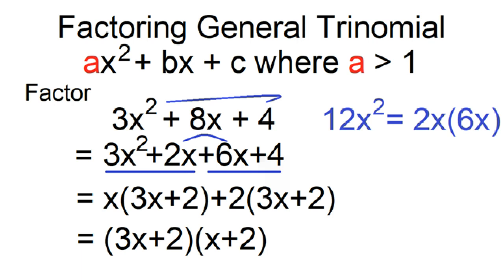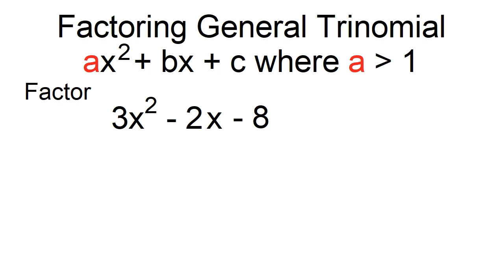Another example: 3x² - 2x - 8. 3x² times negative 8 is equal to negative 24x². The two factors of negative 24x² that add up to negative 2x are 4x and negative 6x.